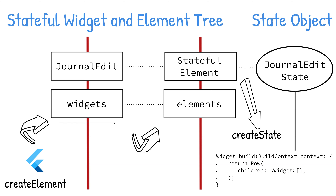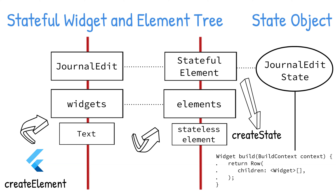Note that if a child widget that displays state is a stateless widget, like a text widget, then the element created for this widget is a stateless element. The state object maintains a reference to the widget, like a stateful widget class, and also handles the construction for the text widget with the latest value. Shown is the widget tree, the element tree, and the state object. Note that the stateful element is a reference to the stateful widget and the state object.